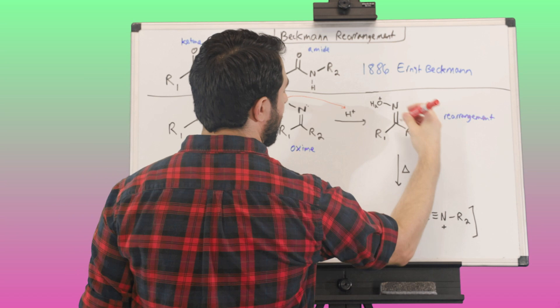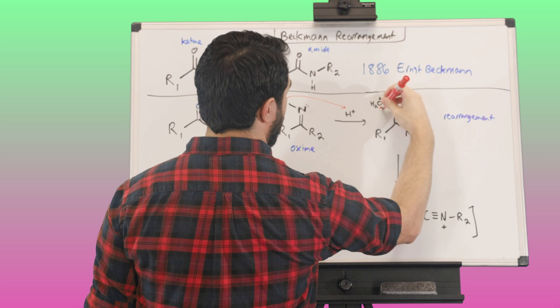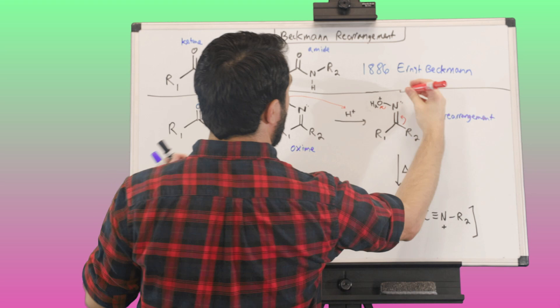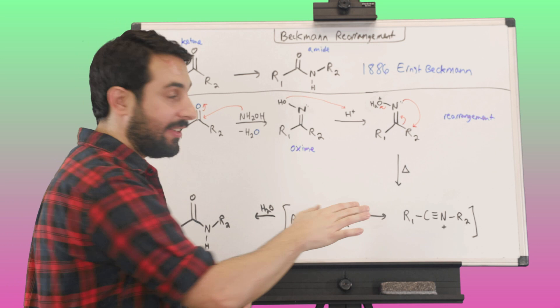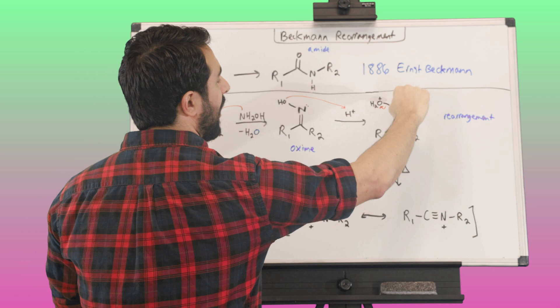So what can happen is this carbon-carbon bond can go here, kicking off water, and then nitrogen can go, let's put that lone pair, can go and pick up the alkyl group. So you can see that this carbon-carbon bond has now become a third carbon-nitrogen bond, thus kicking off water...